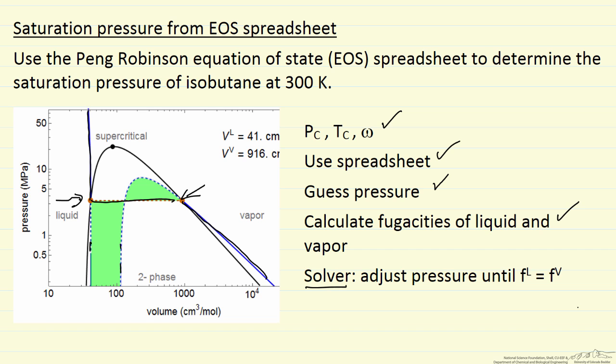And we'll use Solver in Excel to adjust this pressure we guessed until the fugacities are equal for the two phases. And we're actually going to just calculate when the fugacity ratio is 1.